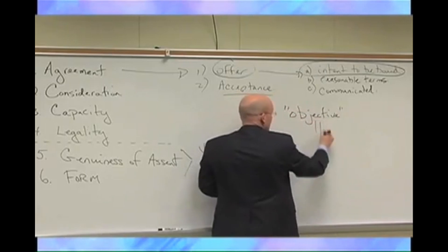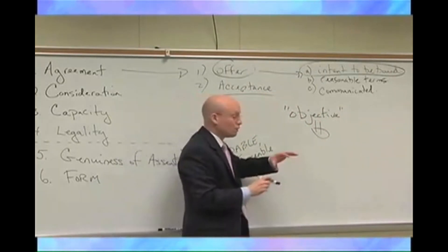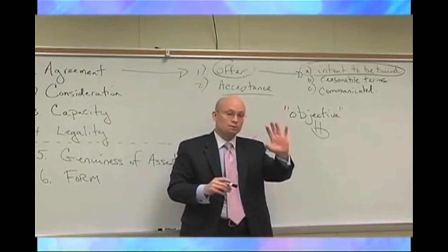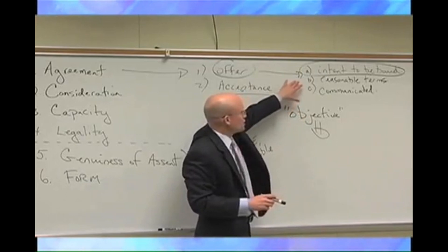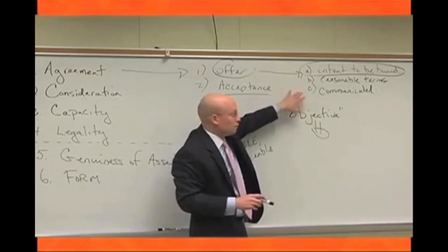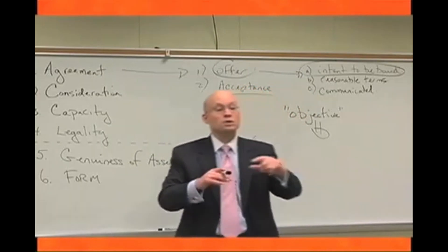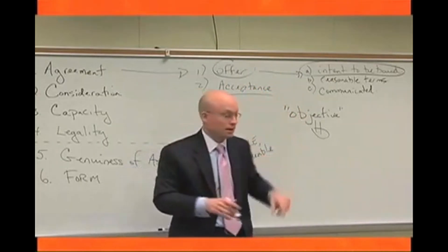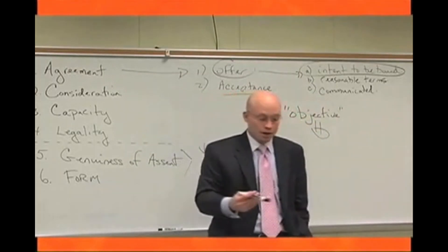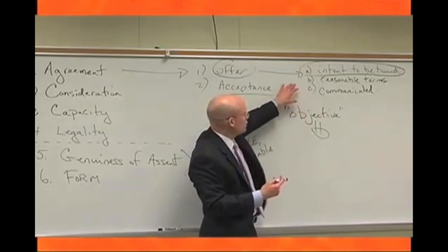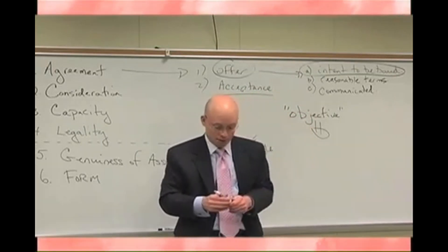Objective is based on a reasonable person standard — whether, if we took a poll of the entire class, they thought this person intended to sell his farm. It doesn't matter what a single person in the room thinks; it matters what the majority thinks. That's how we determine the objective standard — it's the reasonable person standard. In this case involving Lucy buying the farm, the court just looked at the napkin.